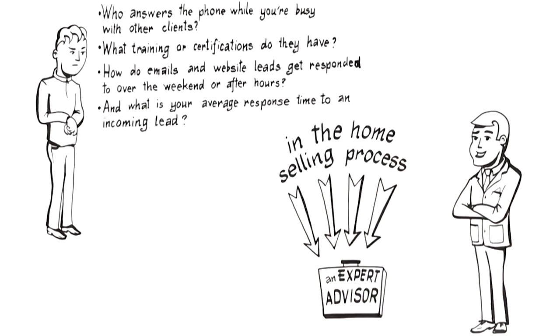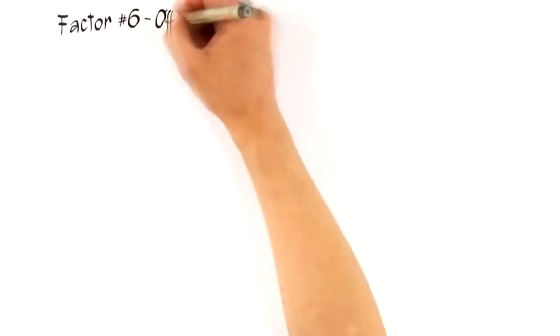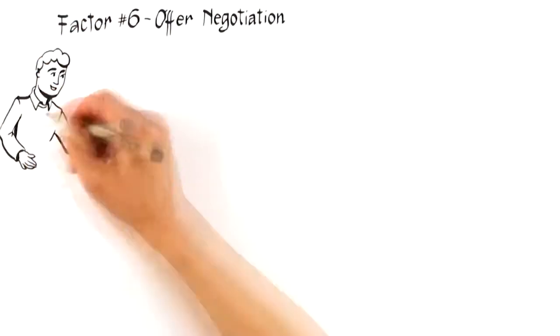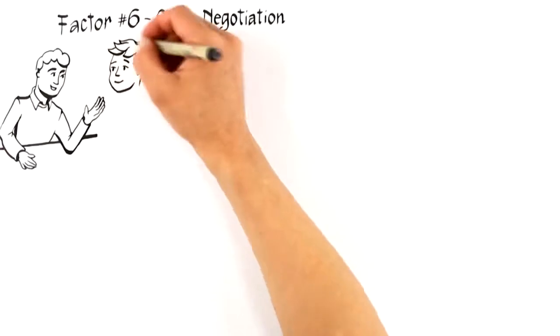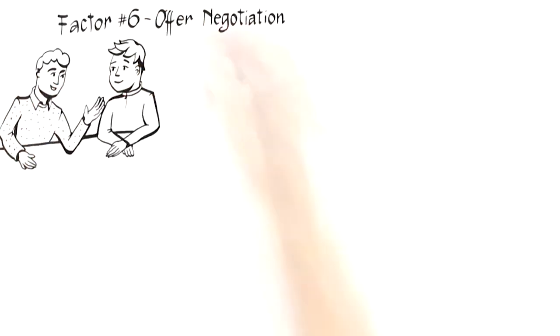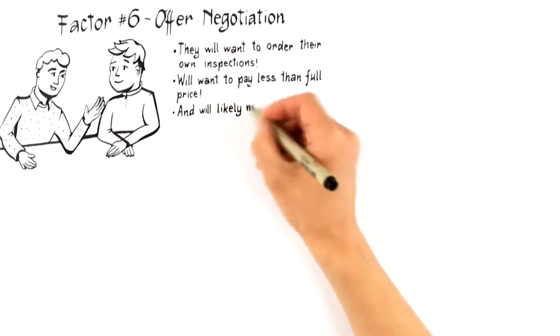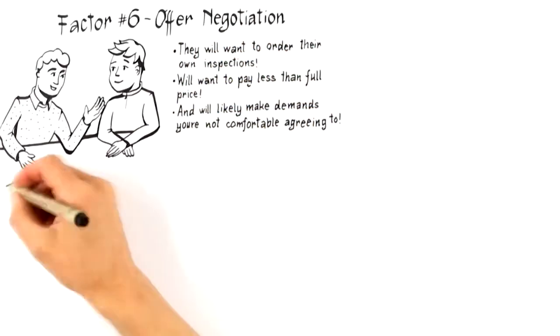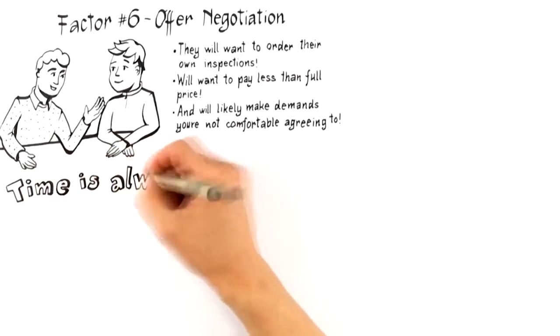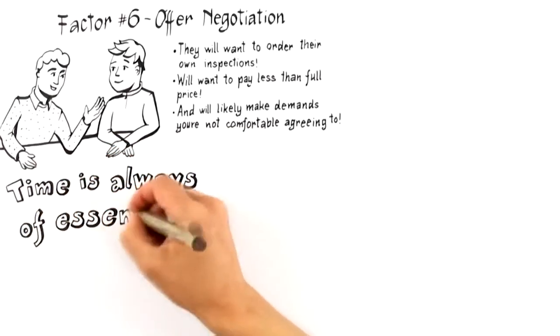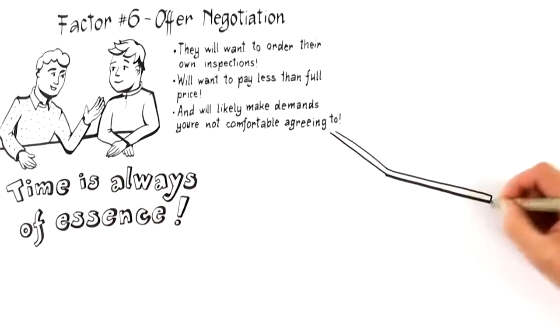All right, the next-to-last factor that influences the likelihood you get top dollar for your home is factor number six, offer negotiation. Regardless of how well a home is positioned to attract the perfect buyer, they will want to order their own inspections, will want to pay less than full price, and will likely make demands you're not comfortable agreeing to. Therefore, not enough can be said about hiring an expert who can negotiate an outcome that serves your best interests.